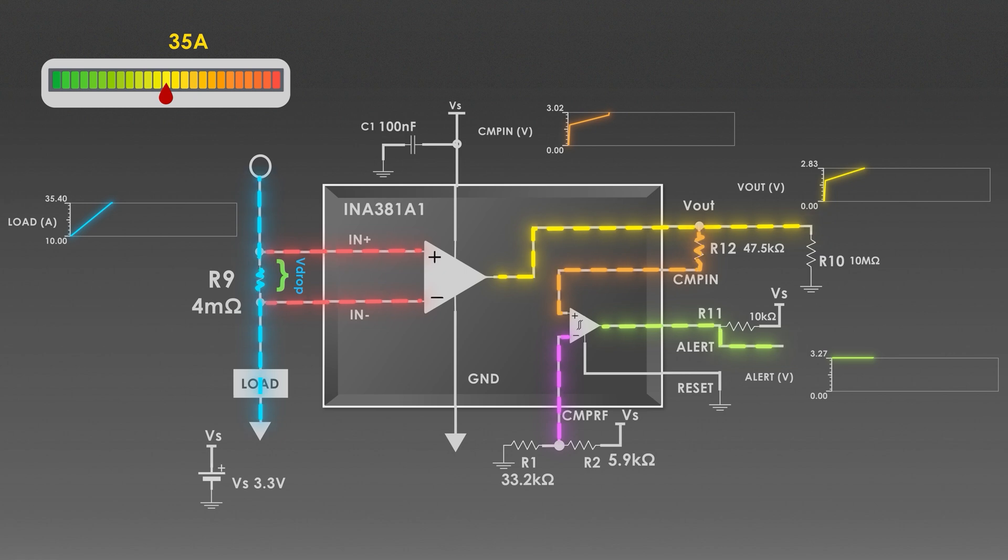When the current reaches 35 Amperes, the alert pin goes low providing the overcurrent alert signal. It stays low until the current is present. When the load current decreases, it still stays on until it reaches hysteresis level which is around 32 Amperes.